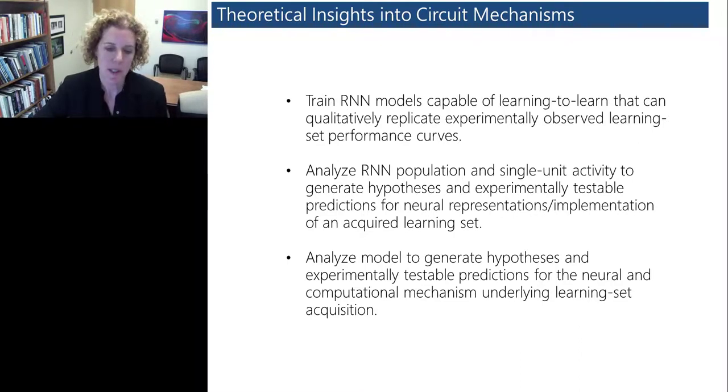We'll also be analyzing the model and generating hypotheses and experimentally testable predictions. Recently advances in the modeling of these recurrent neural networks provide a very promising framework within which to interpret the kinds of complex data that we'll be gathering. By training artificial networks to perform the same tasks as our experimental subjects, these learned dynamics can serve as a plausible network implementation of the cognitive computation. We can then examine these networks to discover hidden dynamical structure of these computations, and we can also develop hypotheses for how the biological network may implement them.